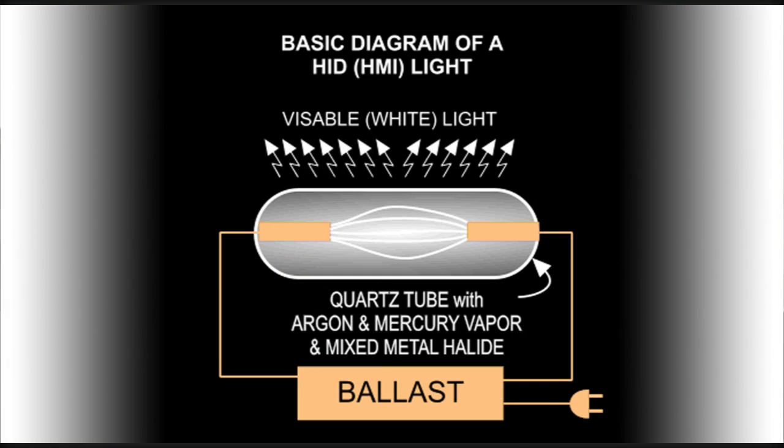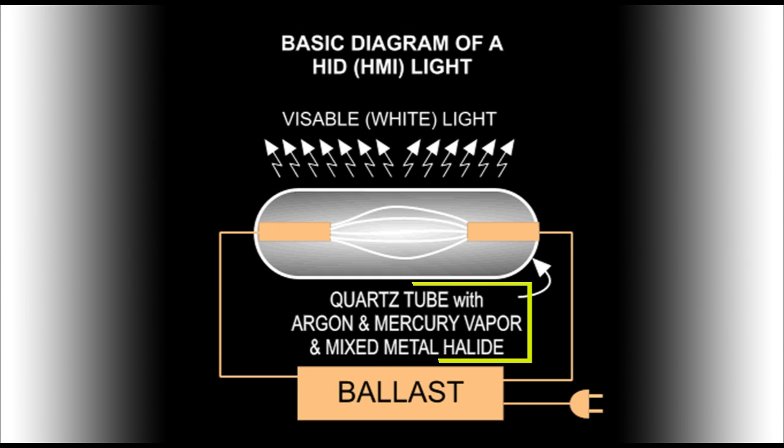An HID light is produced by an electronic arc in a high pressure gas mixture of argon, mercury, and a variety of metal halides, which are metal salts. This mixture of metal salts in exact proportions, operating at 2,000 degrees Fahrenheit, will produce light output with desired color temperatures.